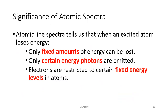The lines viewed in the atomic spectra for different elements were quite significant because they confirmed that energy was quantized — only fixed amounts of energy can be lost or gained. Only certain energy photons would be emitted when an electron fell from a higher to a lower energy state, confirming that electrons must be restricted to certain fixed energy levels within atoms.